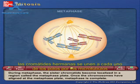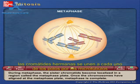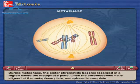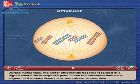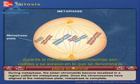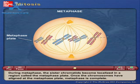During metaphase, the sister chromatids become localized in a region called the metaphase plate. Once the chromosomes have aligned at the metaphase plate, metaphase is complete.